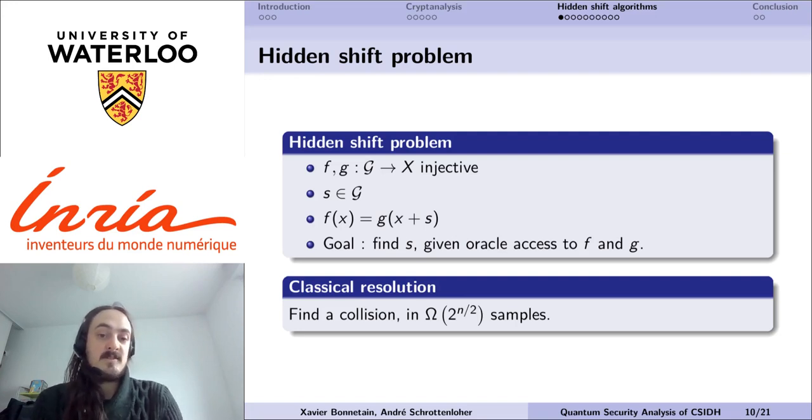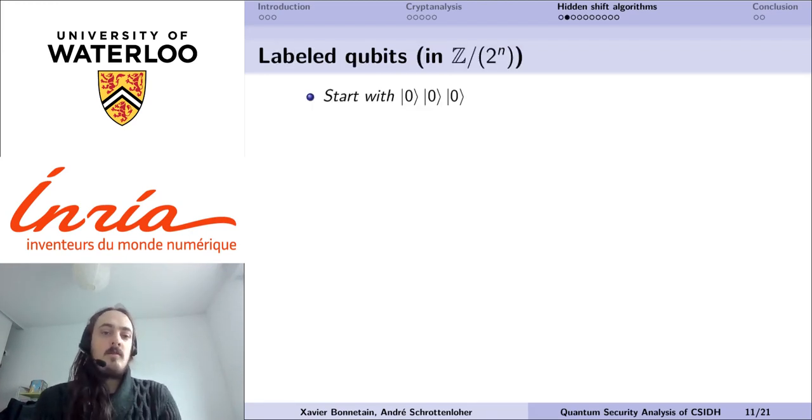Classically, this problem is not that interesting because it reduces to collision finding, but quantumly, we can leverage this specific shift property to obtain much more efficient algorithms.